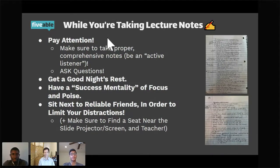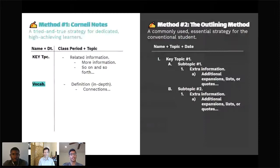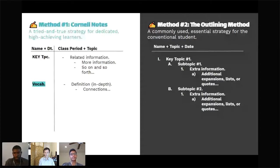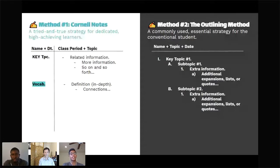We'll be discussing some note-taking methods. Method one: Cornell notes — it's a tried and true strategy for dedicated and high-achieving learners. What you do first is make a vertical line from top to bottom dividing the page into approximately a 25% margin on the left and 75% on the right, as you can see on the screen. Put your name and date on the left column at the very top, and your class period and topic on the right column at the top. On the left you'll have key topics and on the right you'll have related information.